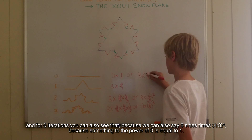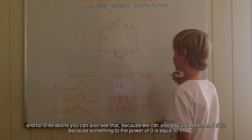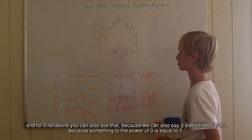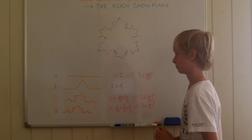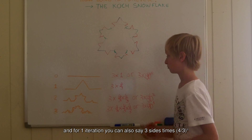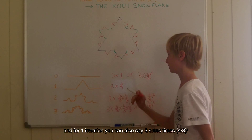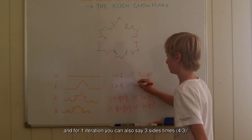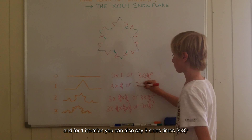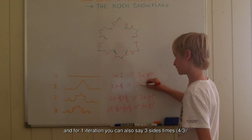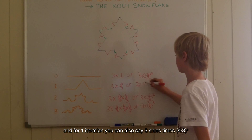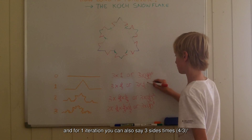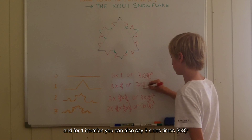After zero iterations you can say 3 sides times 4 thirds to the power of 0, because something to the power of 0 is always equal to 1. And after 1 iteration, you can also say 3 sides times 4 thirds to the power of 1.